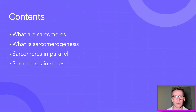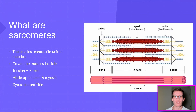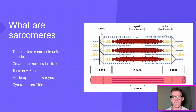Sarcomeres are the smallest contractile unit in the muscles. A group of sarcomeres together forms a myofibril, and eventually these continue to grow and scale up by adding more and more, eventually going up to muscle fascicles. We define tension as the force that's contained within the sarcomere or the muscle.